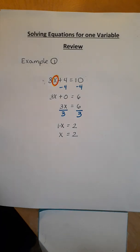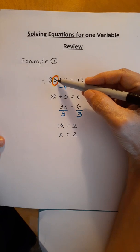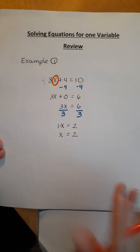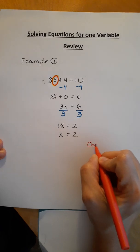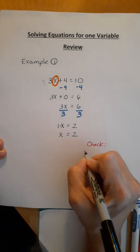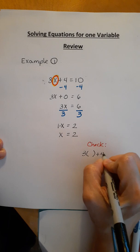Now, if you want to check that, you can go ahead and go to your original equation and substitute 2 for x, and see if you should get 10. So let's try that. I'll do it in red here because we're checking it. Let me write check. 3 times the number, the 2, plus 4 equals 10.